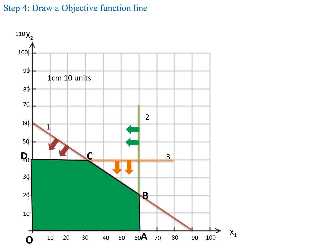Now we will discuss the isoprofit line method step by step. The first step is to determine the feasible region — here OABCD is the feasible region. Next, draw an objective function line. For this, we determine the slope of the objective function line: x1 by x2 equals the coefficient of x2 divided by the coefficient of x1, which is 10 by 15. Mark 10 on the x1 axis and 15 on the x2 axis, join these points to get the objective function line.